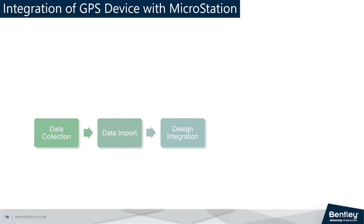For example, if a user is mapping a road network, the GPS data can be used to accurately place the road centerlines in the correct location and with the correct orientation.